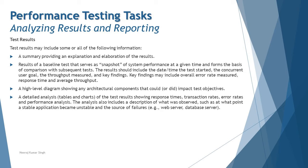A high-level diagram showing architectural components that could or did impact the test objectives should also be included, since performance depends on the design and architecture. The architecture snapshot helps identify which area impacted performance or could be a problem in future. A detailed analysis including tables and charts showing response times, transaction rates, error rates, and performance analysis can be included for anyone interested in a deeper dive into the results.